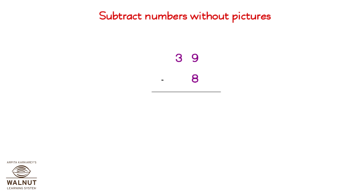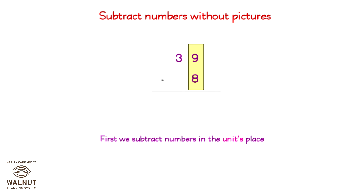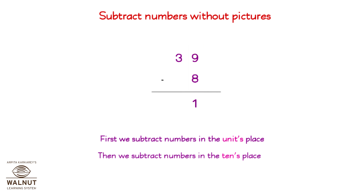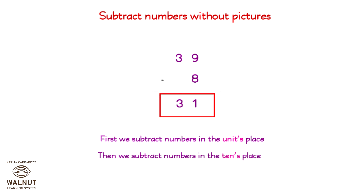Let's try another problem: 39 minus 8. We start from the left and then keep going to the right. First, we subtract numbers in the units place: 9 minus 8 is equal to 1. Then we subtract numbers in the tens place: 3 minus nothing is equal to 3. So that is our final answer. 39 minus 8 is equal to 31.